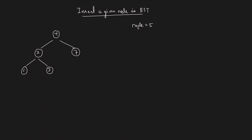Let's not complicate the question. What if we insert the node at whichever leaf position it naturally belongs? Try to figure out where five could have been in the tree. You'd say five should be on the right of the root, then you reach seven and five should be on the left — that position doesn't exist, so you insert five there and return the root. That's the answer.